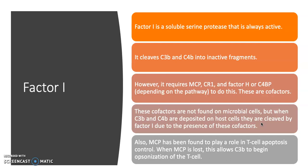These cofactors aren't found on microbial cells, so they're selective to host cells. This means that when C3B or C4B lands on a host cell, the cofactors help factor I recognize these molecules, and factor I is then able to cleave them. Additionally, MCP has been found to play a role in T cell apoptosis control — MCP being present stops the cell from undergoing apoptosis, but as soon as MCP is lost, C3B will begin opsonization of that T cell and mark it for death.